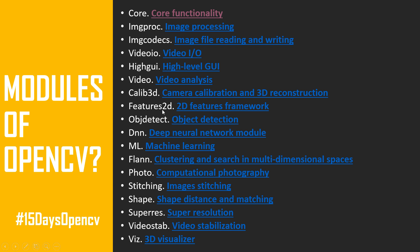The next module is 'feature2d,' which is very important for 2D feature frameworks — used for feature mapping, keypoint detection, and descriptor detection. After that is 'objdetect' for object detection, allowing you to detect any kind of object like a bag, pen, or person. Then there is 'dnn,' the deep neural network module, which is very important when working with neural networks in OpenCV.